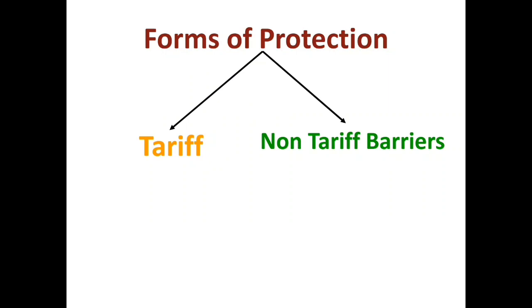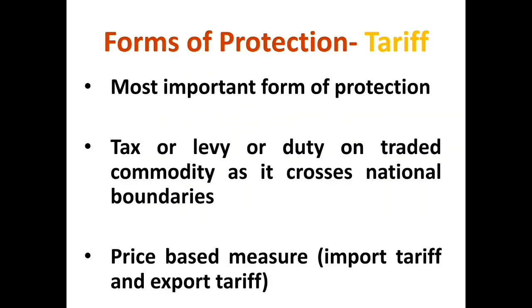We have two methods or forms of protection. One is tariff, the other is non-tariff barriers. Tariff is considered as one of the most important forms of protection. It is defined as a tax, levy or duty imposed on commodities when it crosses national boundaries.